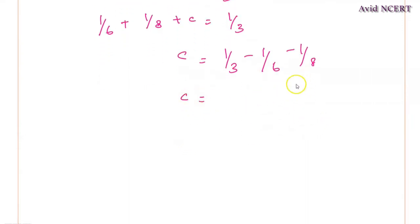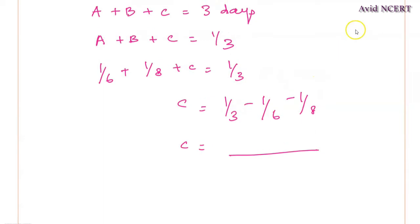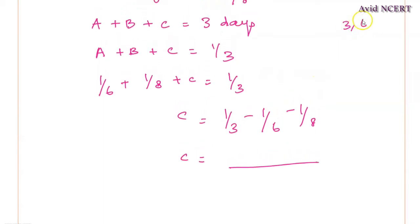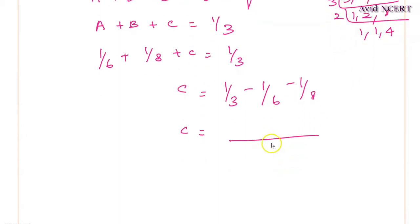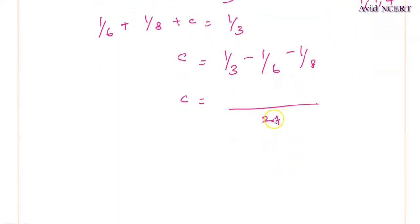So C equals, so we have to find the LCM here for 3, 6 and 8, which is 3, 6, 8. So 3, 1 times 3, 3, 2 times 6, 8. Again, 2, 1 times is 2, 2, 4 times 8. 4, 2 times is 8, 8, 3 times is 24. The LCM is 24.